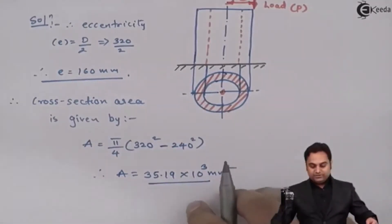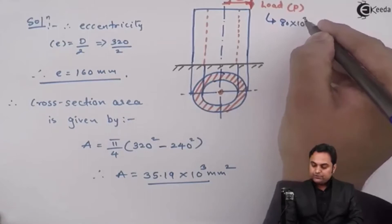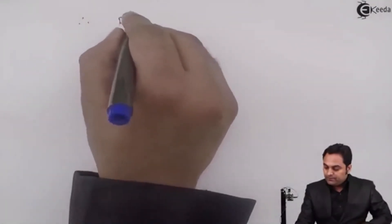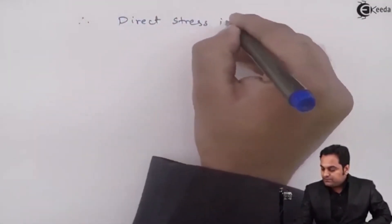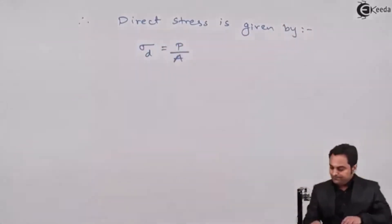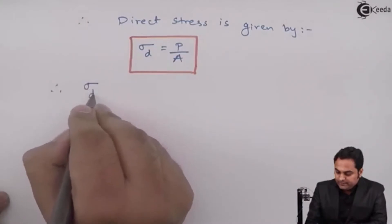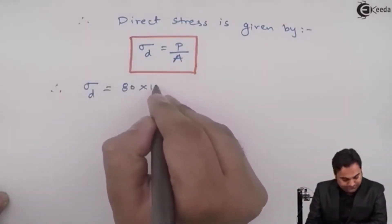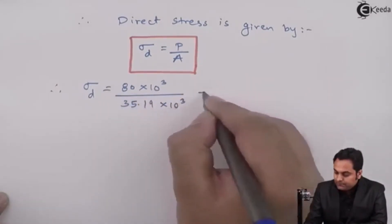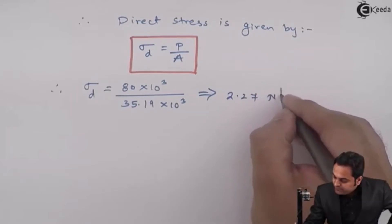After getting the cross-sectional area, since the load is 80×10³ N, we calculate the direct stress. Direct stress σD = Load / Area = 80×10³ / 35.19×10³ = 2.27 N/mm².